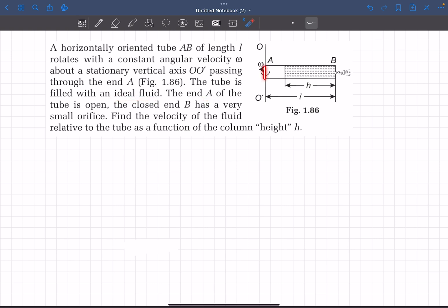So this end is open to the atmosphere. Closed end B has a very small orifice, very small compared to the area of cross-section of the tube.